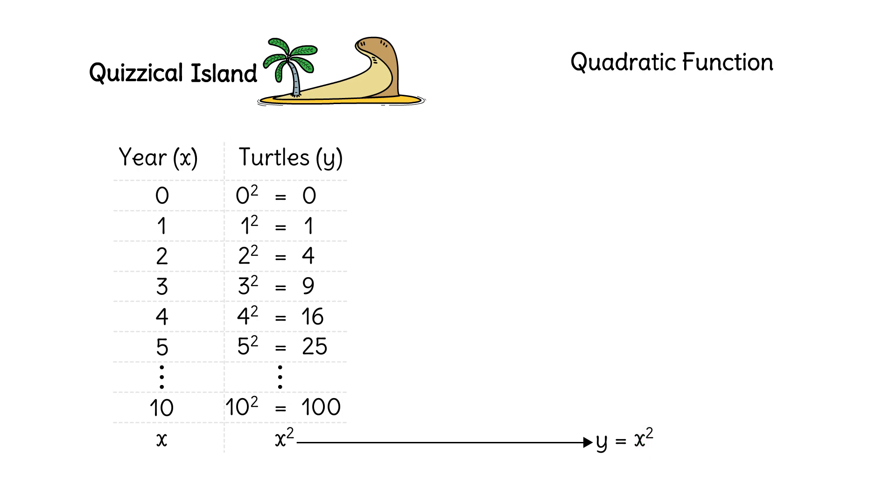We initially recognize a quadratic function by the x squared term. More generally, a quadratic can always be written in the form y equals ax squared plus bx plus c. In this case, a is one, b is zero, and c is zero.